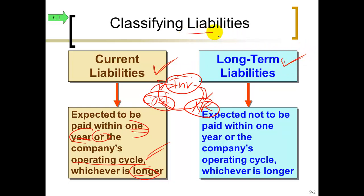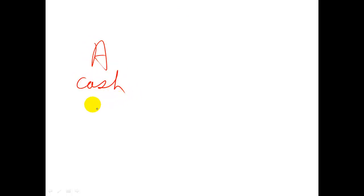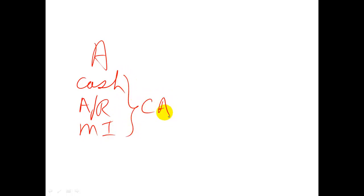Liabilities is just one type of account. We have assets, liabilities, equity, revenue, and expenses. Assets are everything we own — cash, accounts receivable, inventory — these are current assets because they can be converted into cash or used up within one year. Assets that last longer than a year are property, plant and equipment, building, land — so-called fixed assets — not current but long term.